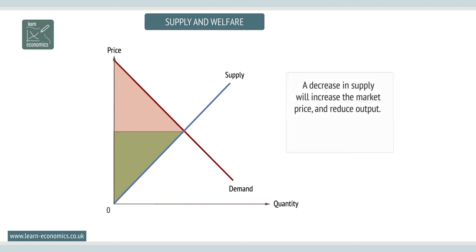Decreases in supply reduce welfare. Both producer and consumer surplus fall when supply decreases. A decrease in supply will increase the market price and reduce output. Both consumer and producer surplus fall.